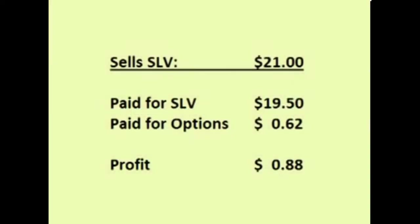For instance, if SLV climbs to $21, the trader uses his options to buy SLV at $19.50 and immediately sells it for $21, making $1.50 a share. However, his up-front cost was $0.62 a share, so his net profit is $1.50 minus $0.62, for a net profit of $0.88.